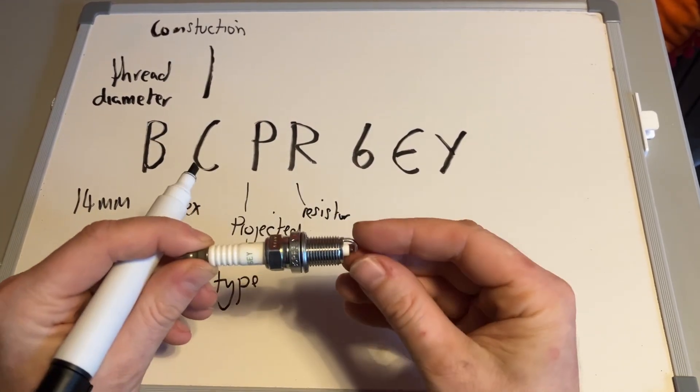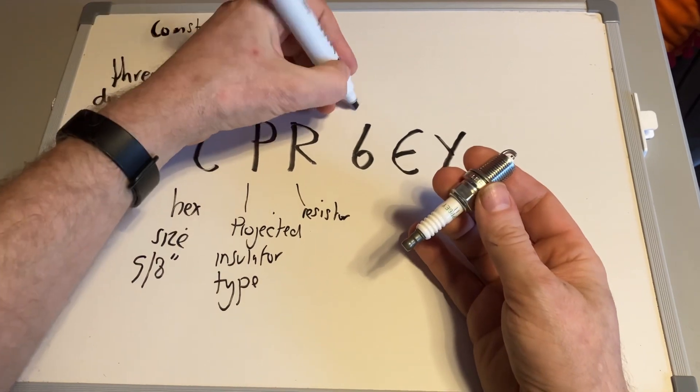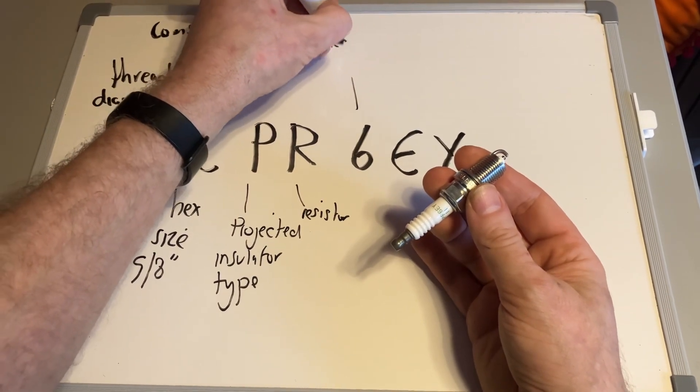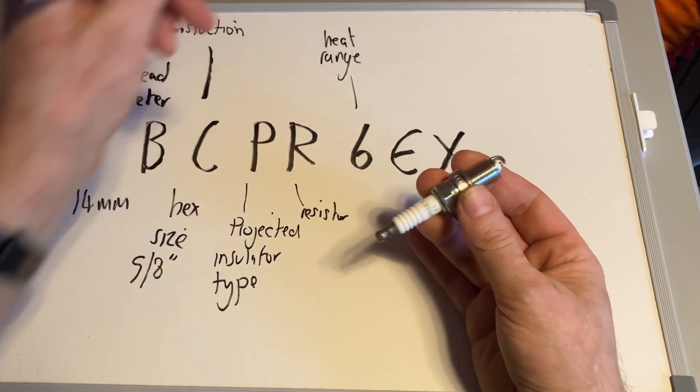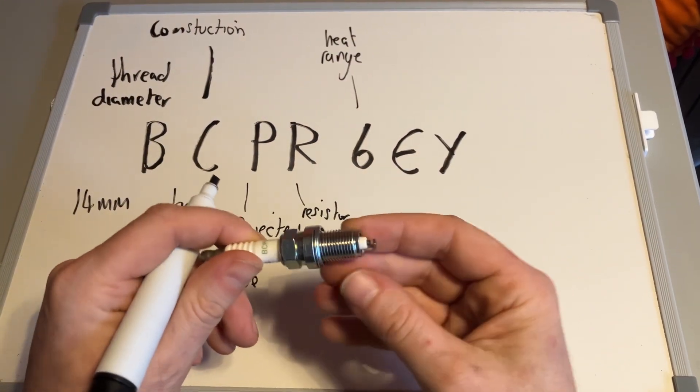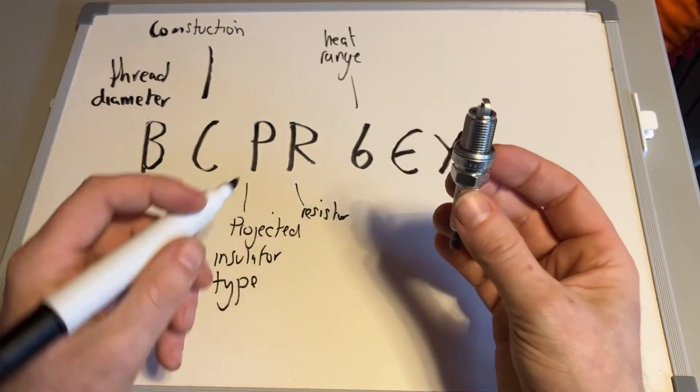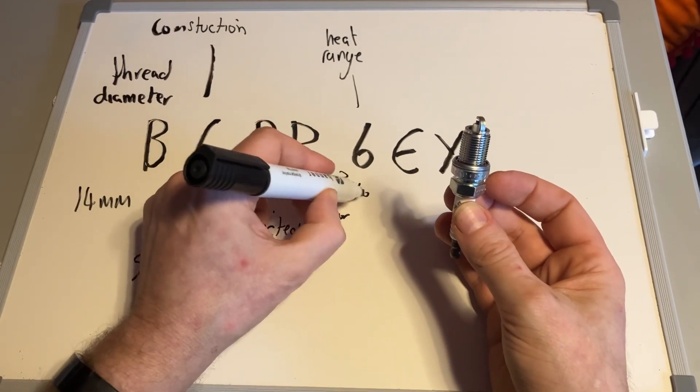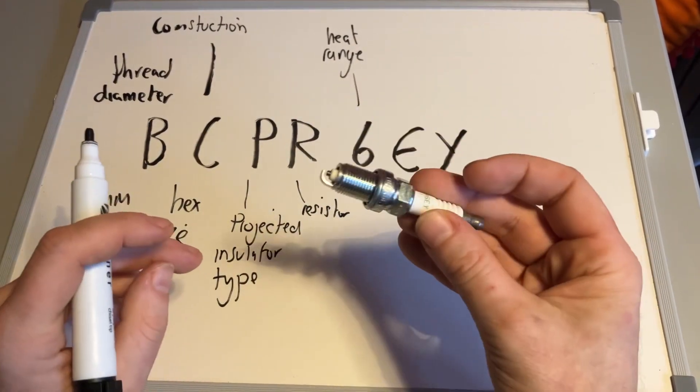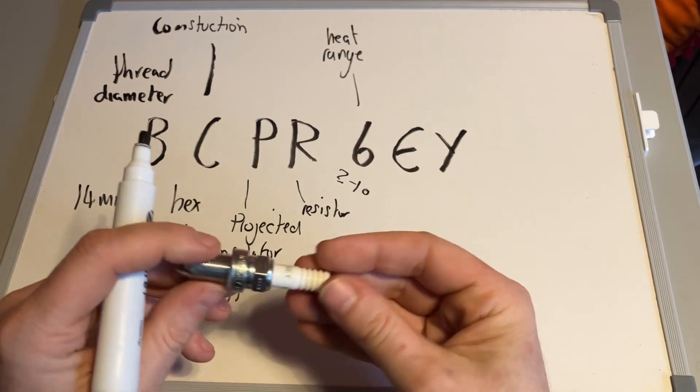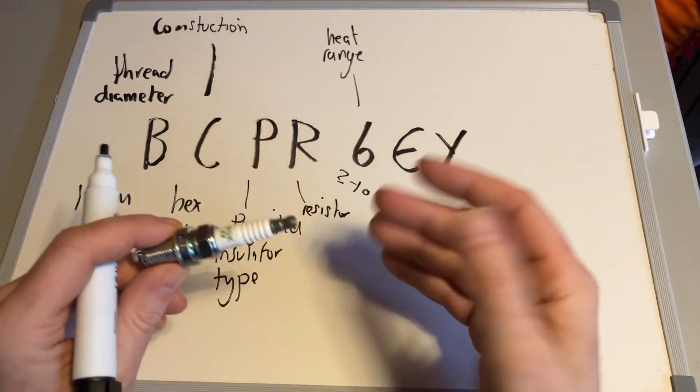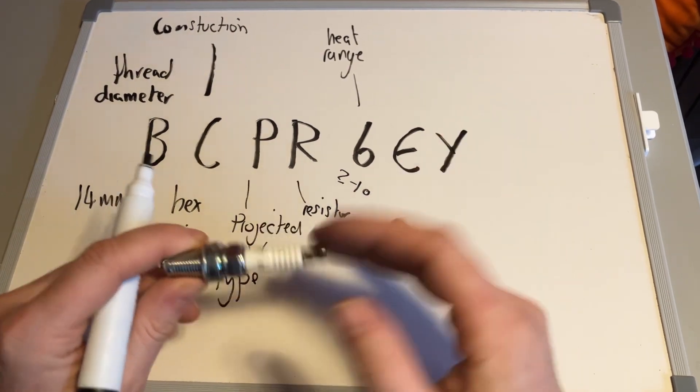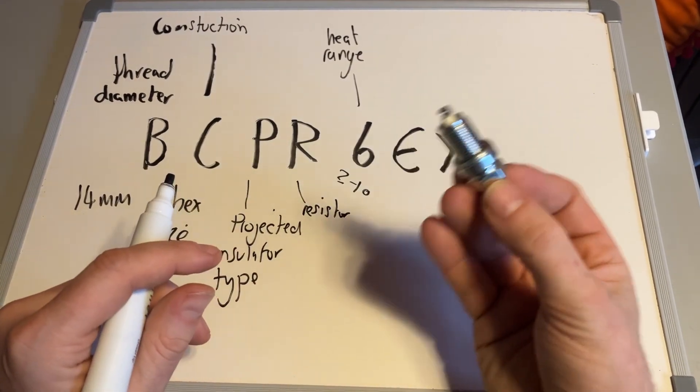Six is the next one, so that's to do with the heat range of the spark plug itself. Different spark plugs are designed to work in different operating temperatures and ranges. This can be anything from two to ten, so this is midway through the range. It's designed to deal with average engine temperatures. Obviously, the hotter the cylinder is going to get, the higher that number would be on the spark plug designed for that particular engine.